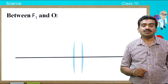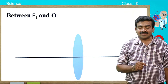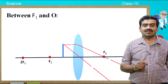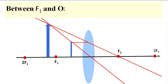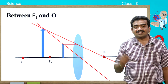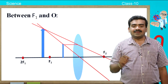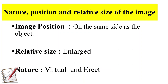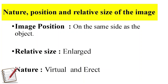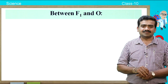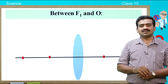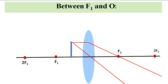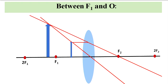What happens if you place the object between F1 and O — that is between the principal focus and optic center? The image is formed on the same side of the object. In this case the image is enlarged, that is we get a magnified image. Image position is on the same side of the object, relative size is enlarged, and the nature of the image is virtual and erect. Practice all these ray diagrams as they are very important for examinations.